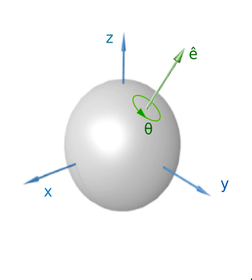A rotation is different from other types of motions: translations, which have no fixed points, and reflections, each of them having an entire dimensional flat of fixed points in an n-dimensional space. A clockwise rotation is a negative magnitude, so a counterclockwise turn has a positive magnitude.